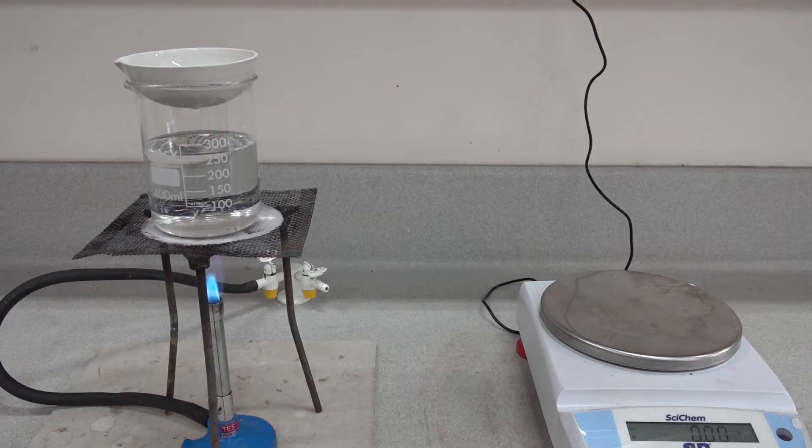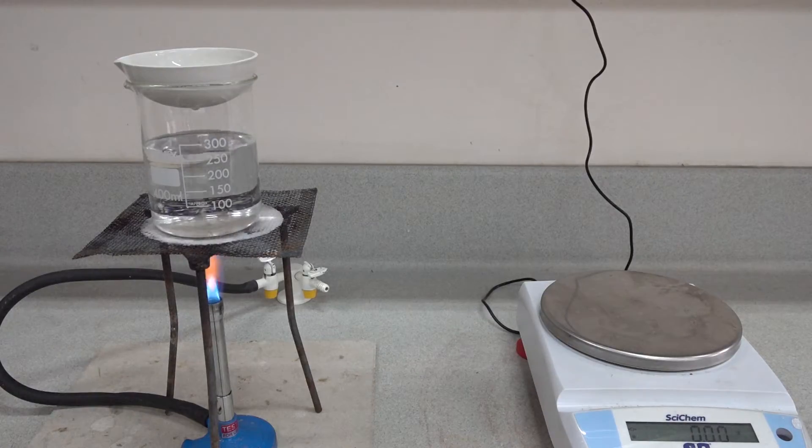As you can observe, the water bath is just starting to boil and we'll need to reduce the heat slightly, closing the air hole on the Bunsen burner for a more gentle heating.